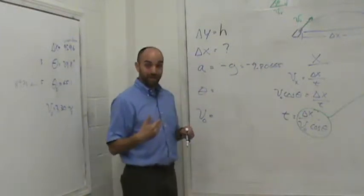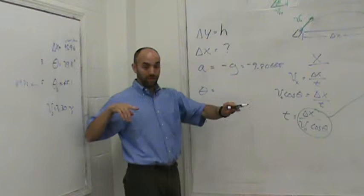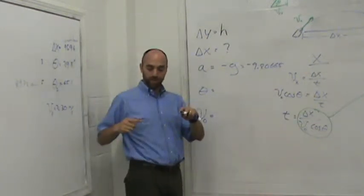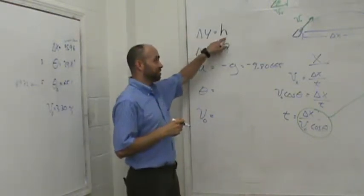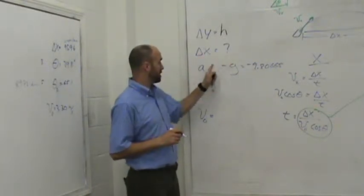For part a of this lab, delta y was zero because it didn't go up or down. It landed on a level playing field. But for this part, for part b, it's going up. It's shooting from down low to up high, so it's got to shoot up. So delta y has to be positive h, and you have to measure it precisely. The question is, what is delta x?